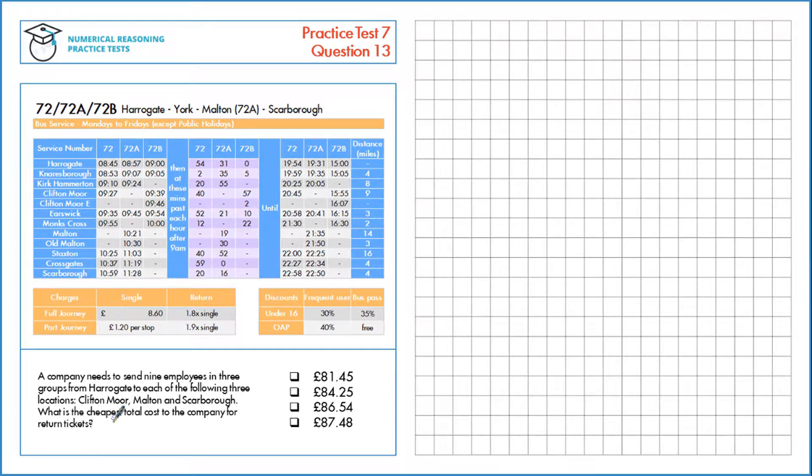Let's calculate it for Group 1 to Clifton Moor. We need to look for the cheapest route that goes to Clifton Moor, and that's the 72B since it's only two stops and we are charged per stop.